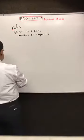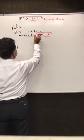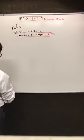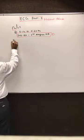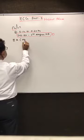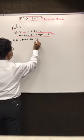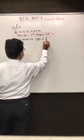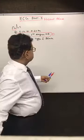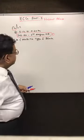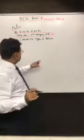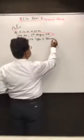Now we talk about first-degree heart block — you can make a box like this and do numbering: box number one. Now we talk about 2A block, also known as Mobitz type 1 block. First of all, I like to remind you: do not get confused with Mobitz type 1 block with first-degree heart block. First-degree heart block is different, and Mobitz type 1 block is different. In fact, in the exam this is the most commonly asked question.